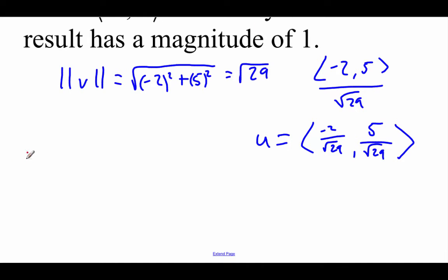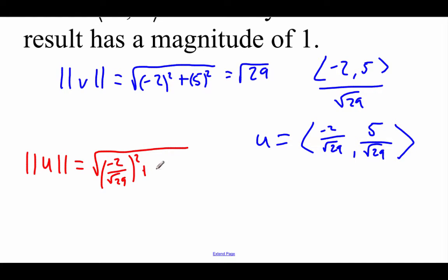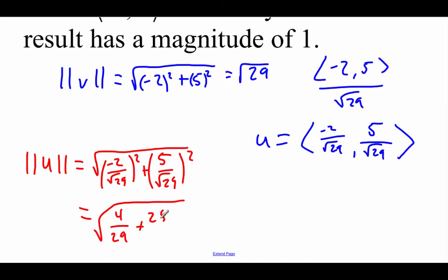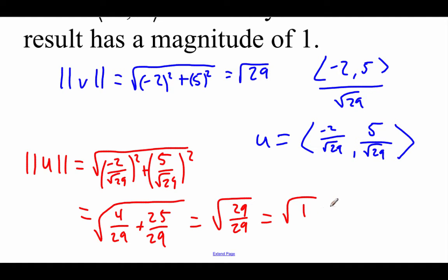Let's verify that it's actually a unit vector by finding its magnitude. We take the square root of that x value — negative 2 over the square root of 29 — squared, plus 5 over the square root of 29 squared. When squaring a fraction, we square the top and the bottom. With the first fraction we get 4 over 29, plus 25 over 29. That gives us the square root of 29 over 29, which is just the square root of 1, which equals 1. So this u vector is in fact a unit vector for vector v.